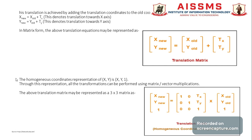We achieve translation by adding the translation values to the old coordinates: x_new = x_old + tx (translation along the x-axis), and y_new = y_old + ty (translation along the y-axis). In matrix form, this is written as: [x_new, y_new] = [x_old, y_old] + [tx, ty]. From homogeneous coordinate representations, x and y become (x, y, 1).